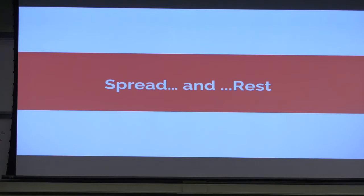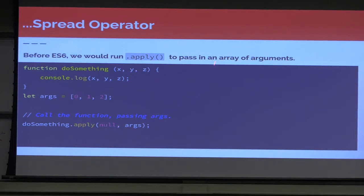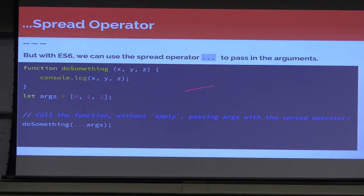The next topic is spread and rest, which are amazing but can get a little confusing. Before ES6, to pass an array of arguments to a function you would use apply — specifying null for the 'this' value so the array would split up into individual arguments. But another way to do it is with the spread operator. The spread operator takes an array and spreads it out so that doSomething receives 0, 1, and 2 as individual arguments rather than an array.